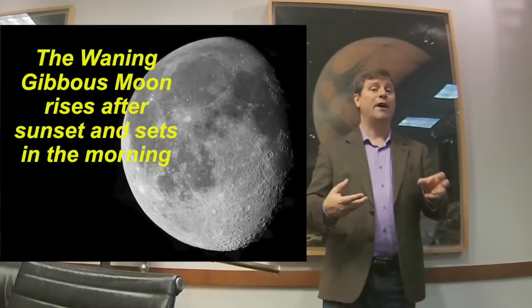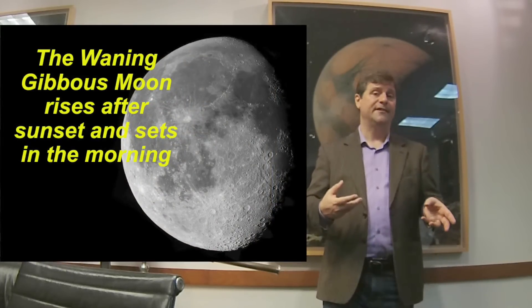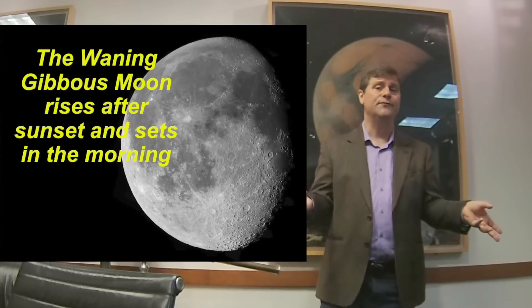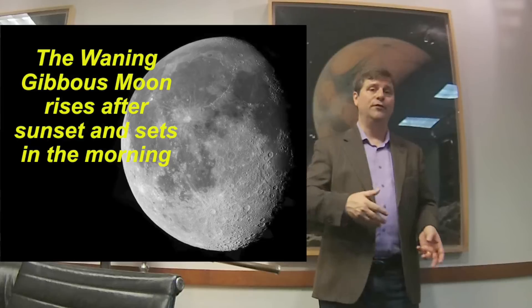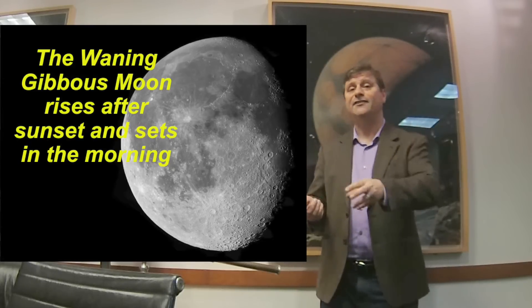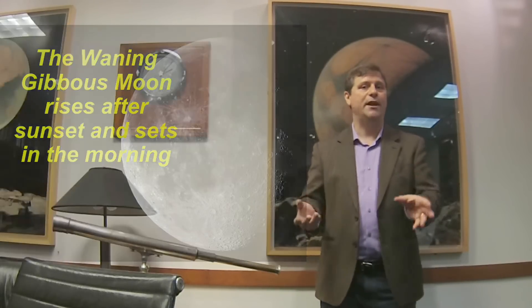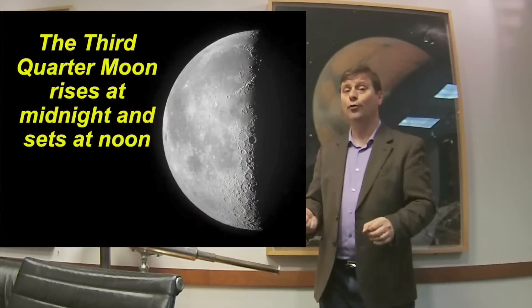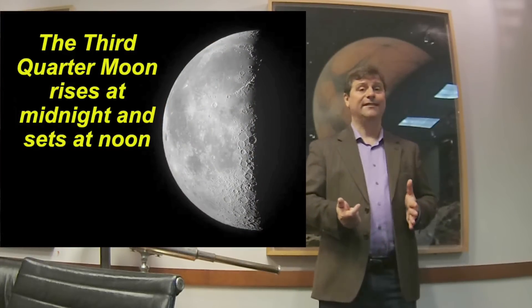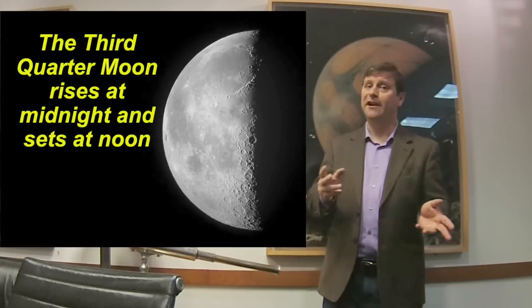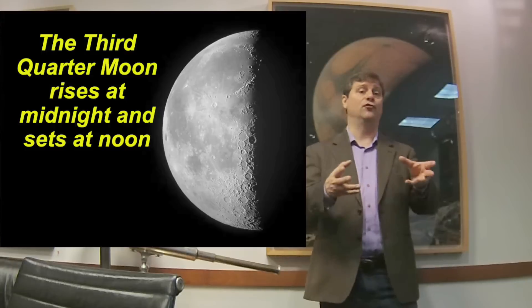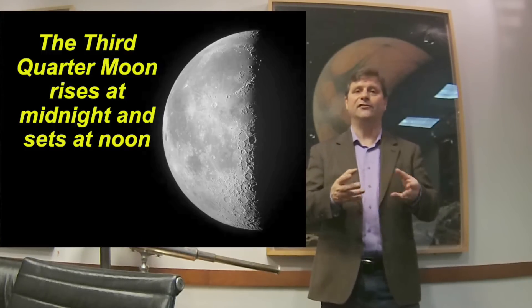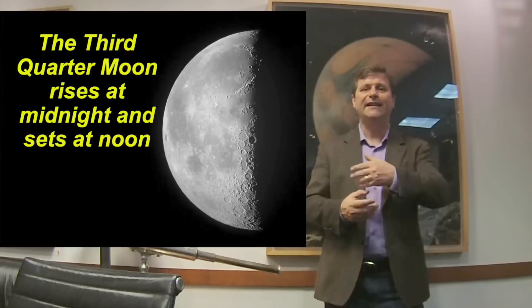After full Moon, the waning gibbous Moon rises after sunrise, so there's a time when the Moon is not in the sky at all during the nighttime. The third quarter Moon rises at midnight and sets at noon, so it's up for half the day. It's very hard to see it in the morning, but you can probably catch it in the early morning of the third quarter Moon.